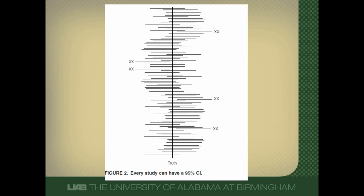To make the statistical definition clearer graphically: there is some truth out there when we do a study — some higher being really knows the effect of our weight loss intervention, and that's the truth. All these little lines represent 100 studies repeated over and over again of the same intervention, and each of these lines is a confidence interval around that. There's variability in studies. Five of these studies, represented by double X's, have confidence intervals that do not include the truth. That's where the definition of a 95% confidence interval comes from — 95% of the confidence intervals, if we repeat a study over and over, would include the truth. Thus, five of them won't.